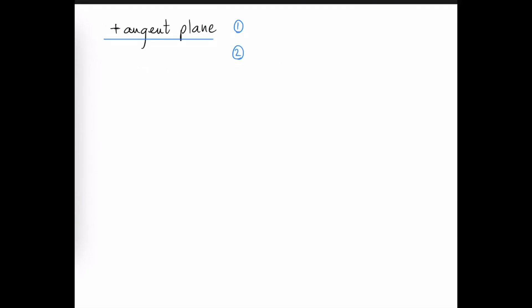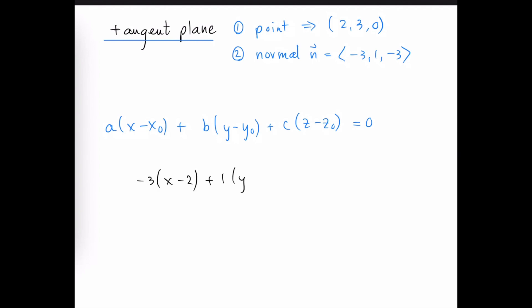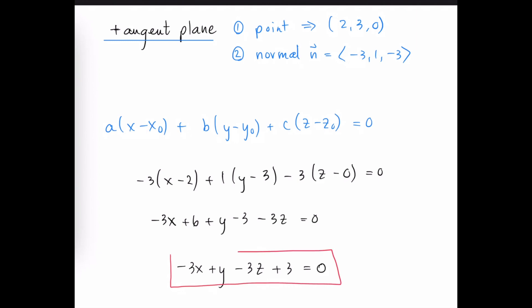To get the equation of the tangent plane, we need a point — which was given as (2, 3, 0) — and a normal vector, which we calculated as ⟨−3, 1, −3⟩. Substituting into the tangent plane equation gives: −3(x − 2) + 1(y − 3) − 3(z − 0) = 0. Simplifying yields the final tangent plane equation.